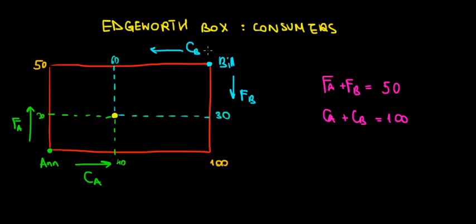Because the economy is closed, we have a limited amount of food and clothing. So suppose that in total we have 50 units of food and 100 units of clothing. Intuitively we can understand that because it's closed, the food of one person must complement the food of the other person. And the same logic goes to clothing.